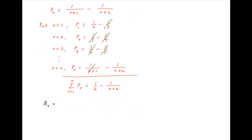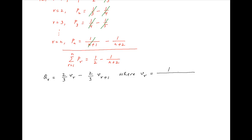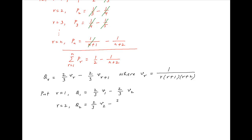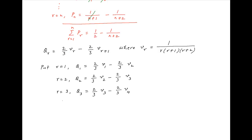Now we will evaluate summation q_r. Recall that q_r is equal to 2/3 times v_r minus 2/3 times v_{r+1}, where v_r = 1 upon r(r + 1)(r + 2). Putting r = 1: q_1 = 2/3 · v_1 minus 2/3 · v_2. Putting r = 2: q_2 = 2/3 · v_2 minus 2/3 · v_3, and so on. Putting r = n: q_n = 2/3 · v_n minus 2/3 · v_{n+1}.